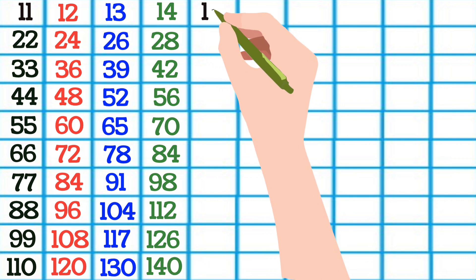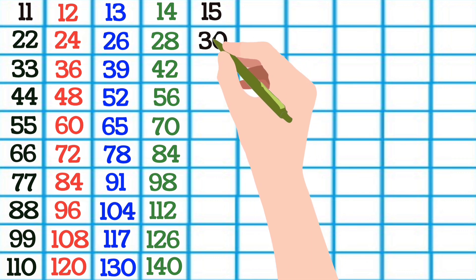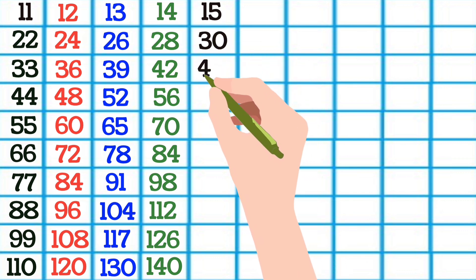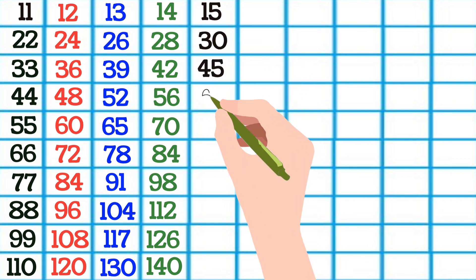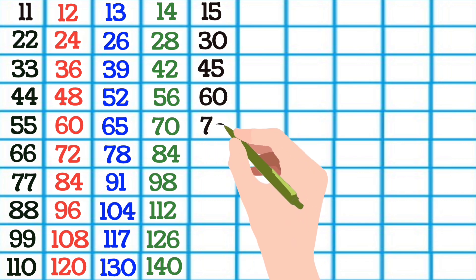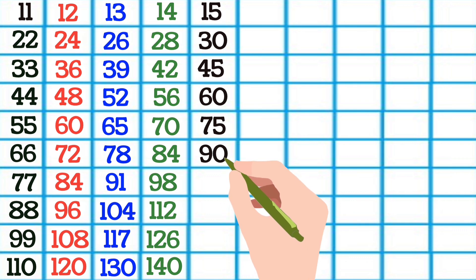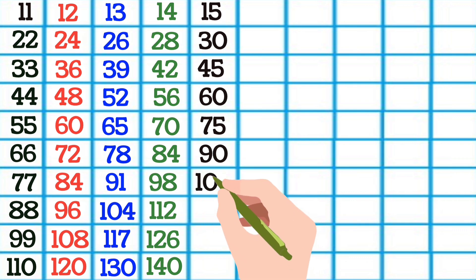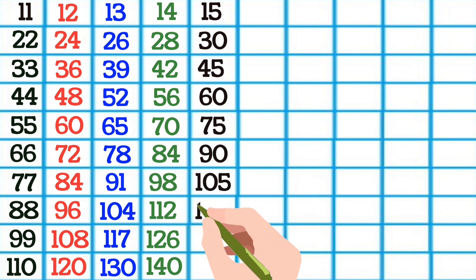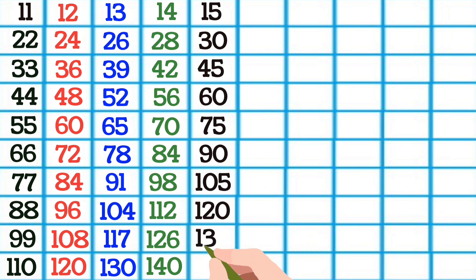15 1s are 15, 15 2s are 30, 15 3s are 45, 15 4s are 60, 15 5s are 75, 15 6s are 90, 15 7s are 105, 15 8s are 120, 15 9s are 135, 15 10s are 150.